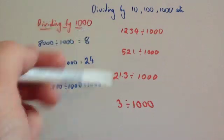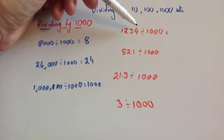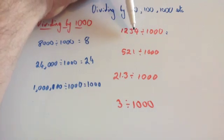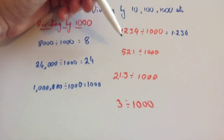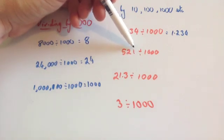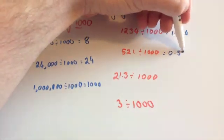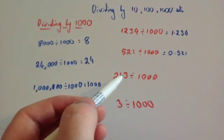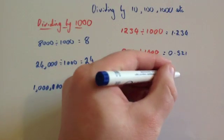Let's look at what happens whenever you divide numbers that don't end in zeros by 1,000. 1,234 divided by 1,000 — the decimal place is at the end of the number, move it three places to the left to give you 1.234. 521 divided by 1,000 — the decimal place is at the end, move it three places to the left, so it would be 0.521. 21.3 divided by 1,000 — move the decimal place three places to the left, and it would be equal to 0.0213.